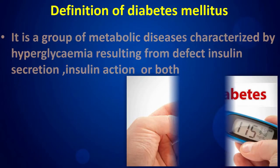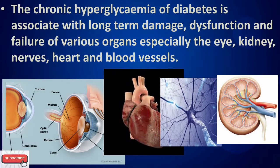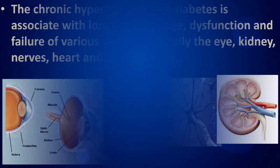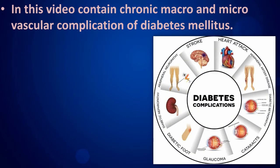Diabetes mellitus is a group of metabolic diseases characterized by hyperglycemia resulting from defects in insulin secretion, insulin action, or both. The chronic hyperglycemia of diabetes is associated with long-term damage, dysfunction, and failure of various organs, especially the eye, kidney, nerves, heart, and blood vessels. This video covers the chronic macro and microvascular complications of diabetes mellitus.